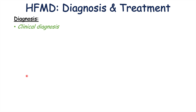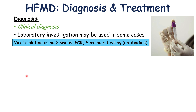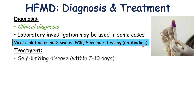How do clinicians diagnose hand, foot, and mouth disease? Oftentimes it's going to be a clinical diagnosis — by history, physical examination, and by seeing whether there are multiple cases in the community. Laboratory investigations can also be used, including viral isolation using swabs, PCR (polymerase chain reaction) — which is helpful in distinguishing between enterovirus 71 and other viruses — and serologic testing looking for antibodies.